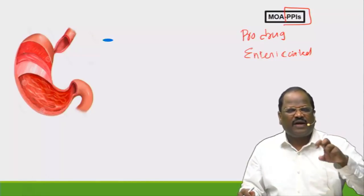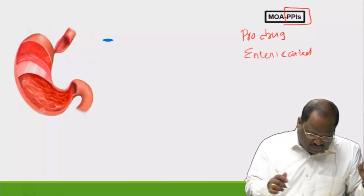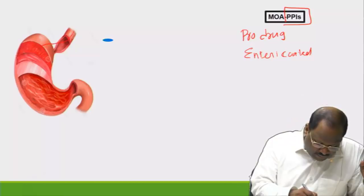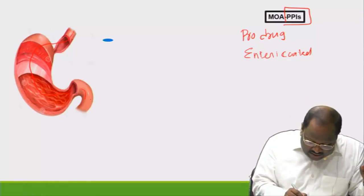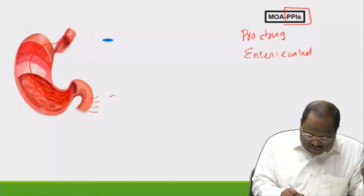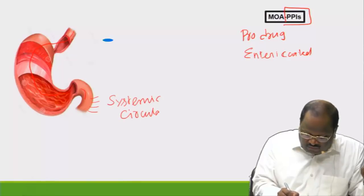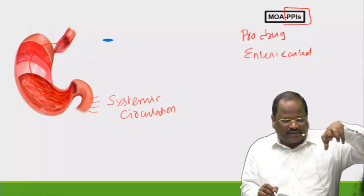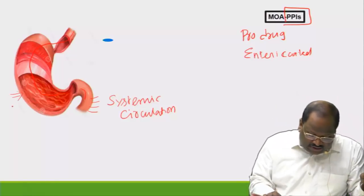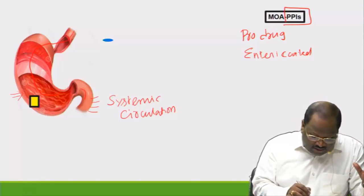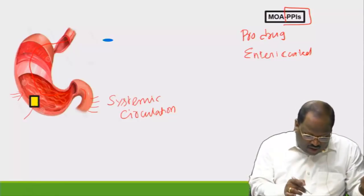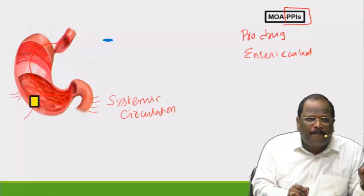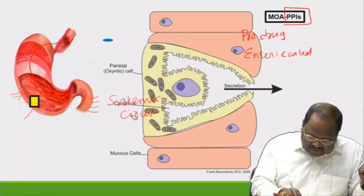Now I will explain mechanism-of-action based MCQs on proton pump blockers. When you take a proton pump blocker orally, it reaches the small intestine, gets absorbed, goes into systemic circulation, and from systemic circulation enters the stomach. In the stomach we have parietal cells, and the proton pump blocker enters the parietal cell.